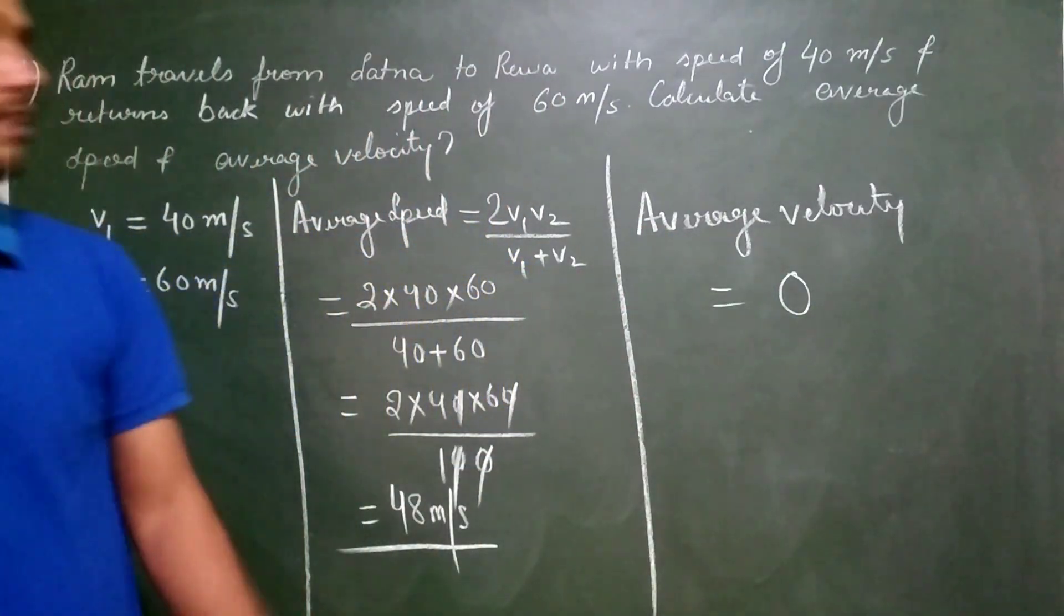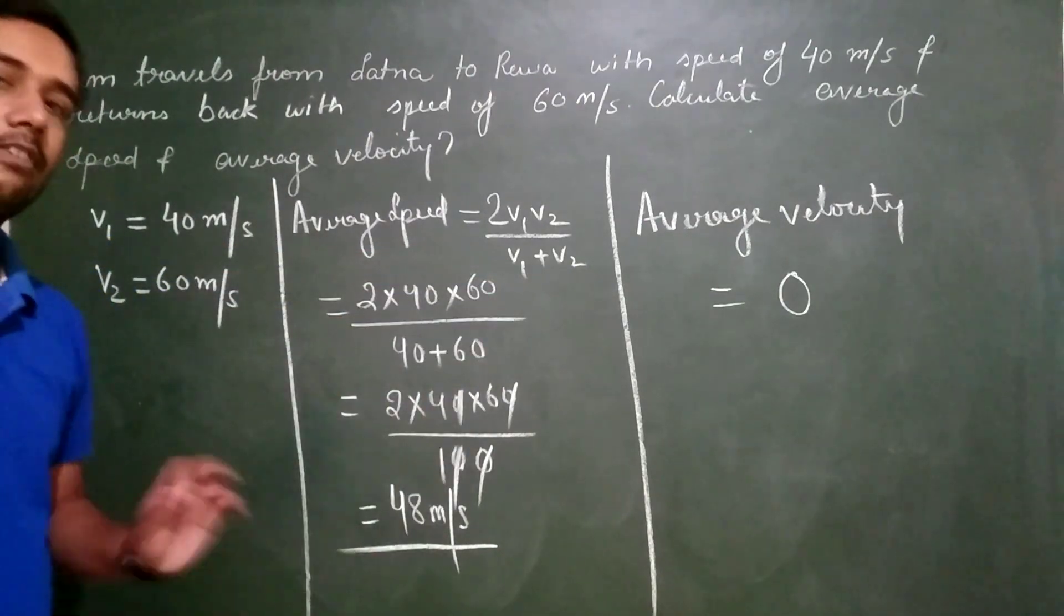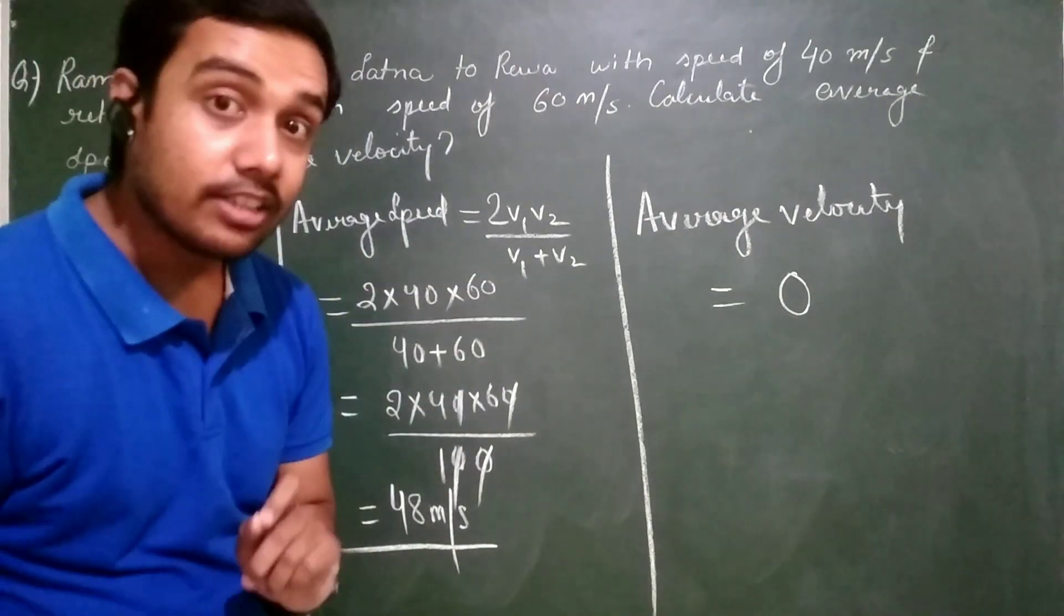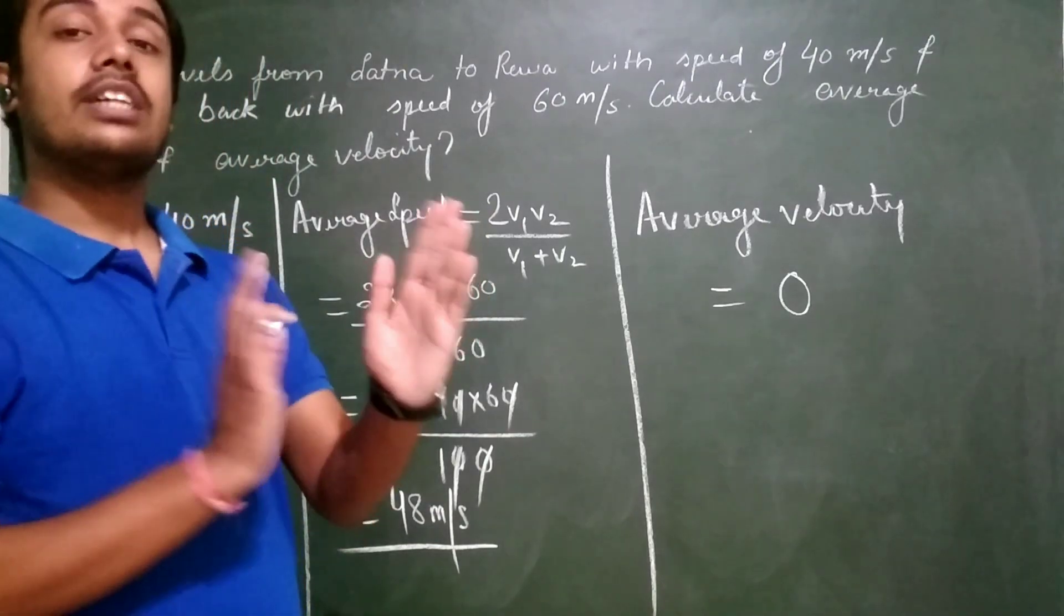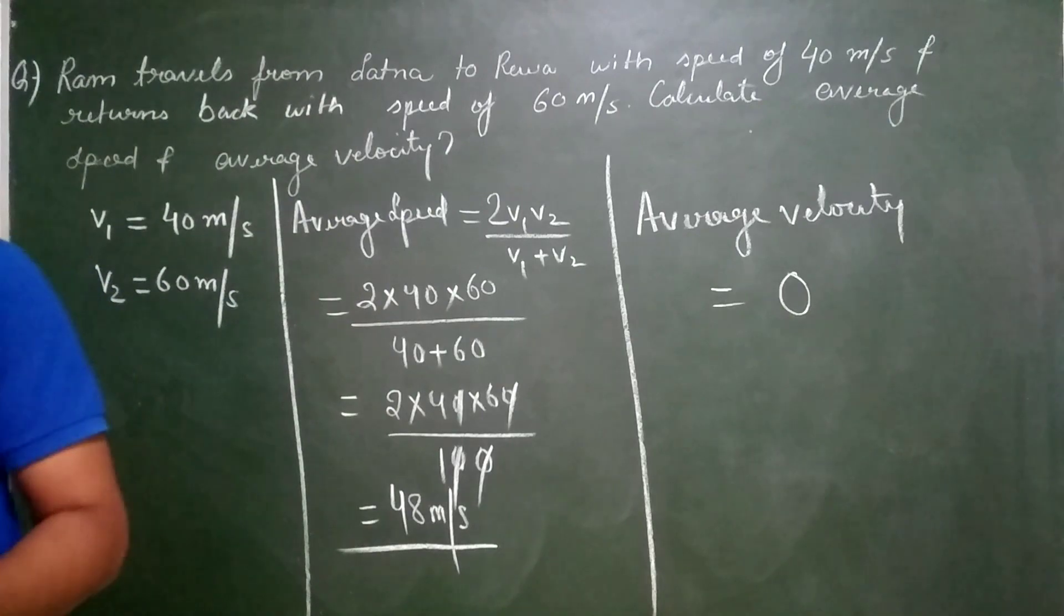This was one remark related to the formula 2V1V2 upon V1 plus V2. When do you have to apply this formula? Only when the object covers equal distance on either side. I hope it is clear to you.